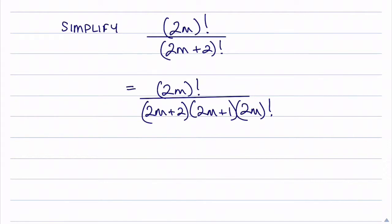Now you should notice that we have a 2m factorial in the numerator and denominator, so I can go ahead and just cancel those. And what I'm left with is 1, and that's all over 2m plus 2 multiplied by 2m plus 1.